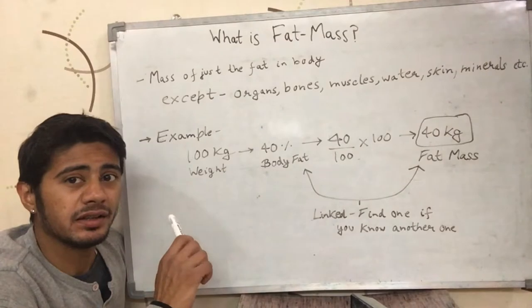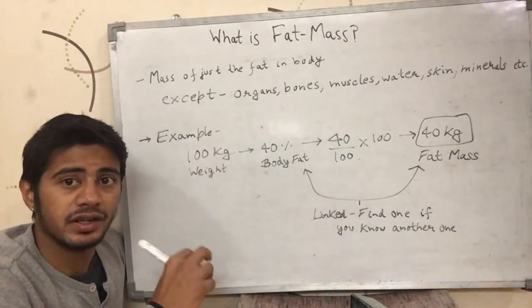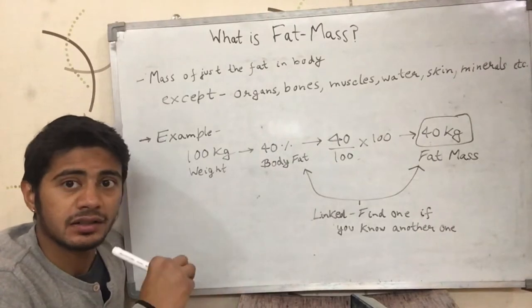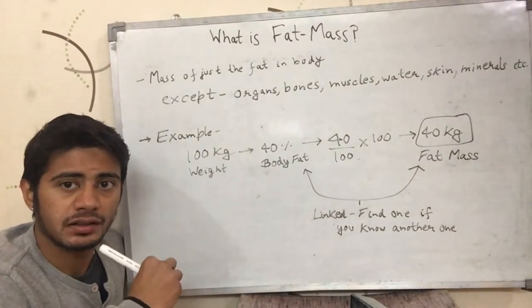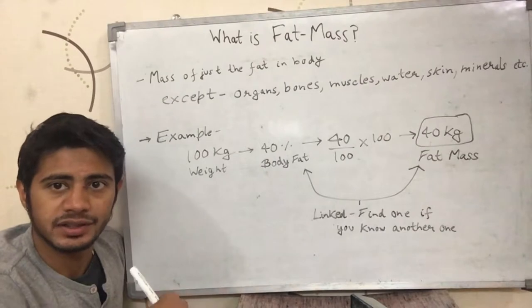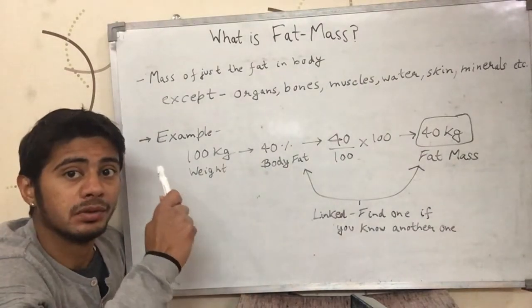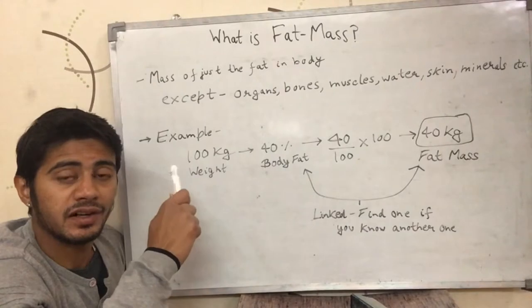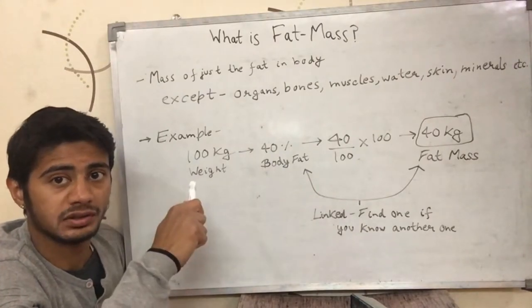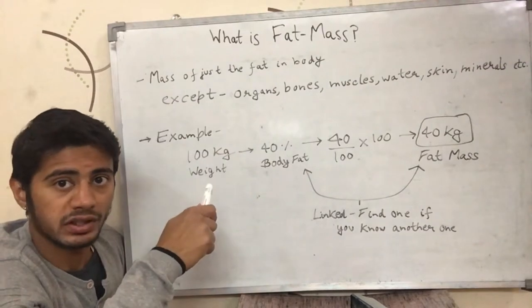Basically, fat mass is just the weight of the fat in your body. That fat includes the fat on your abdominal region and the fat under your skin. That fat mass, which is the weight of the fat in your body, excludes the weight of the rest of the things in your body.